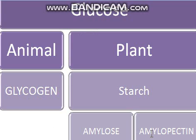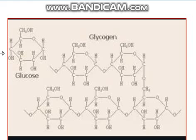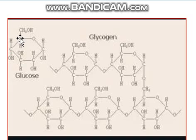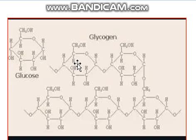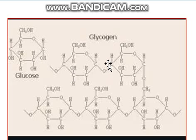Glycogen and starch are differentiated based on the bonding that takes place between monomers. Looking at the structure of glucose, it has six carbons. In amylose, which is a part of starch, carbon one and carbon four are linked in a linear structure — this alpha 1-4 linkage is called amylose.